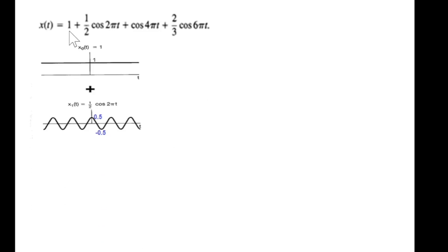First of all we add the first two. This is DC value one, with that we add a signal of amplitude half and its frequency is 2π. From here to here is one cycle of 2π. Adding these two will just move this up because of the DC component, so this is the addition.